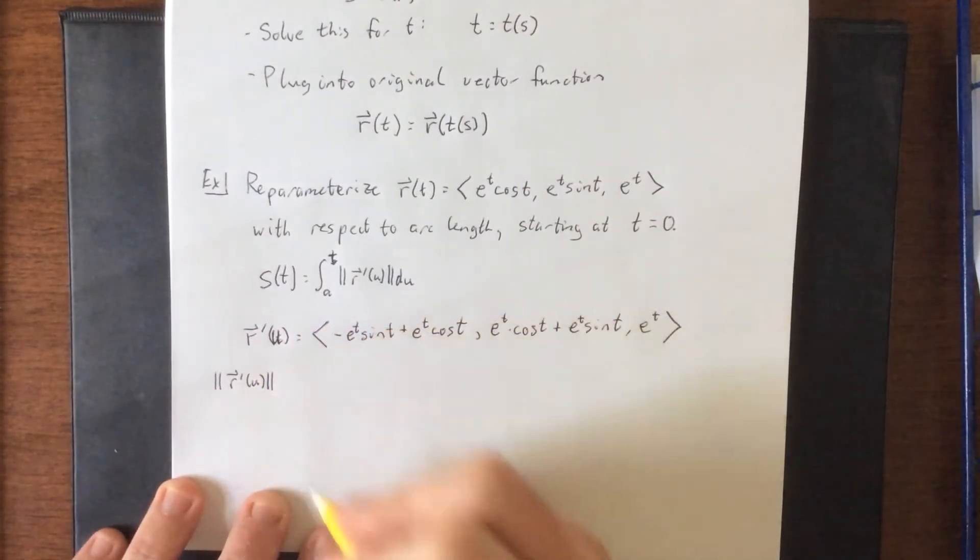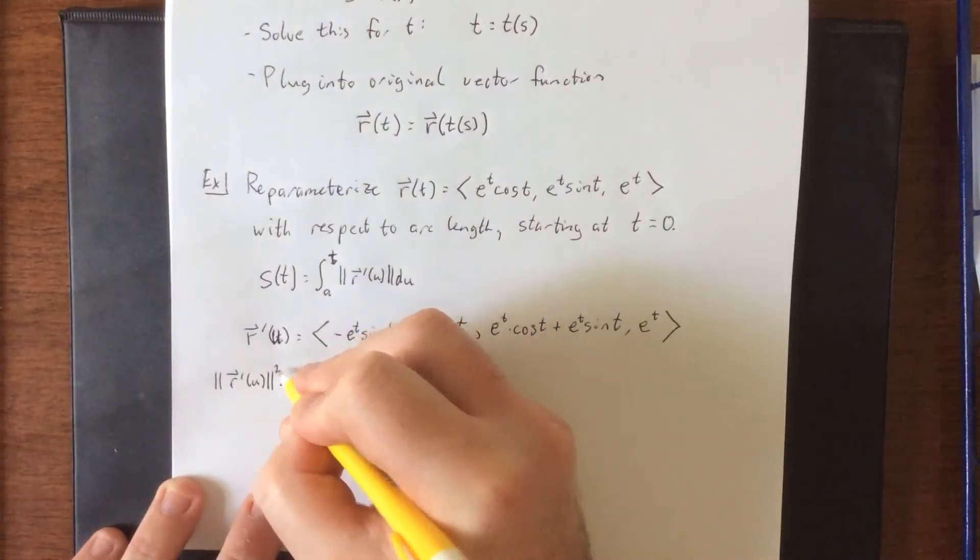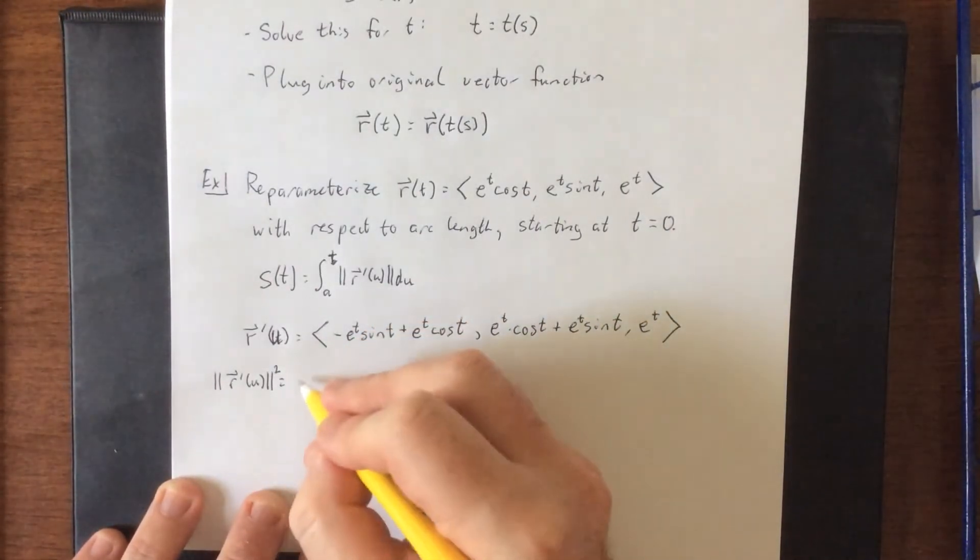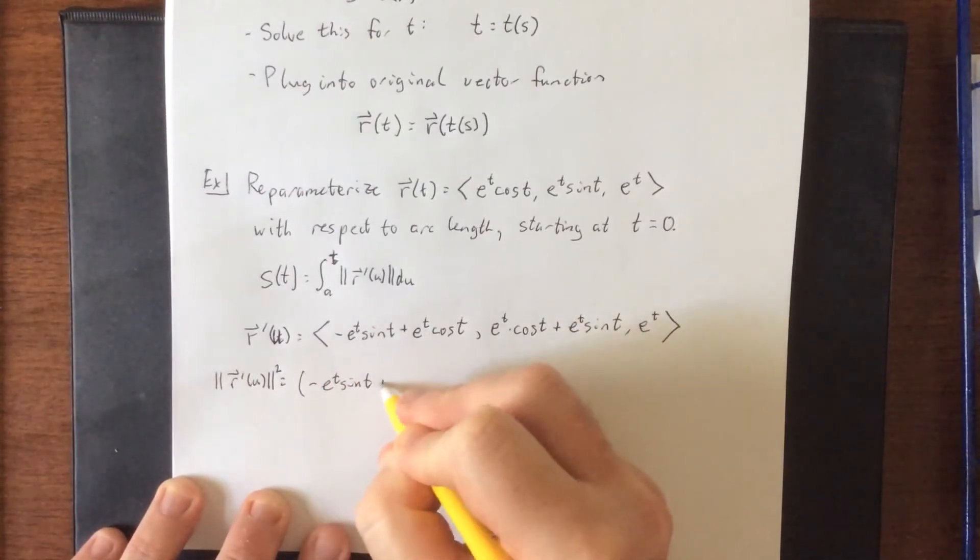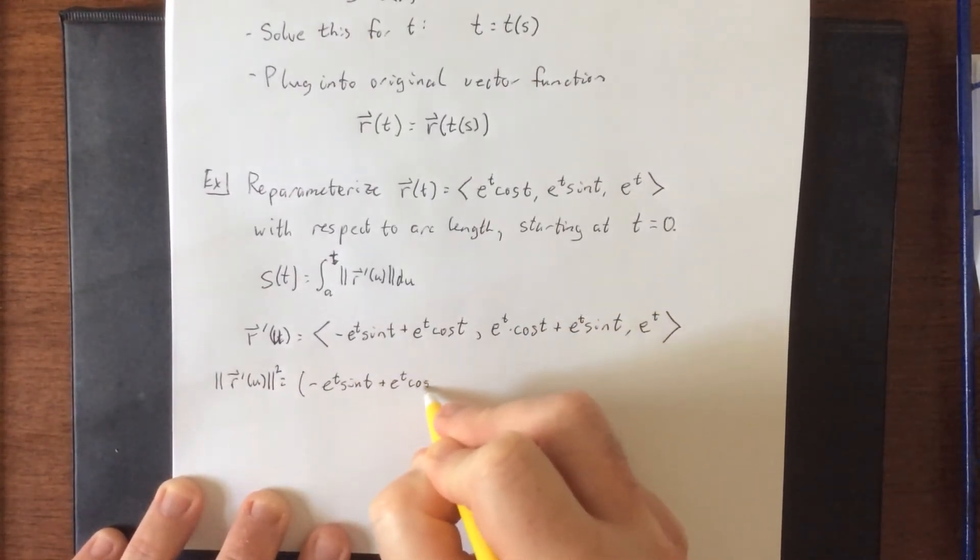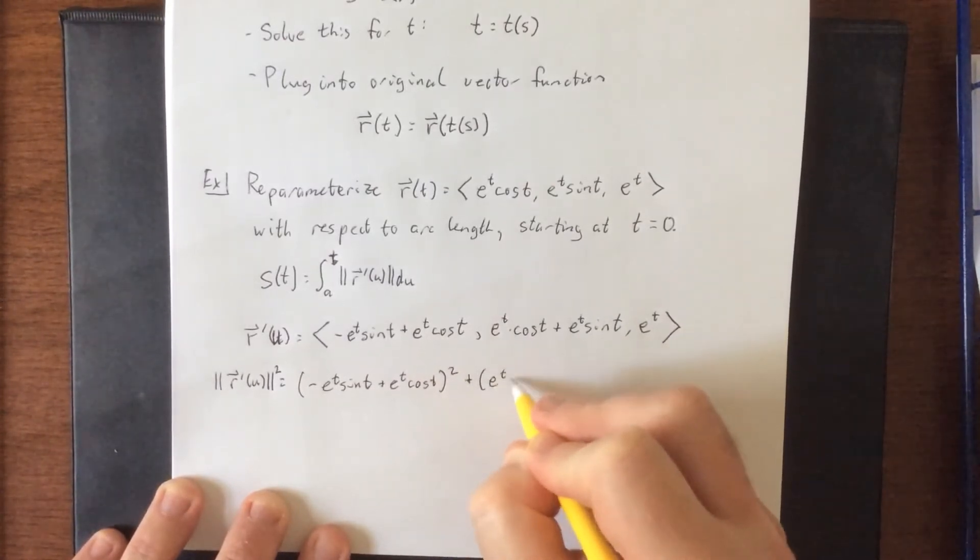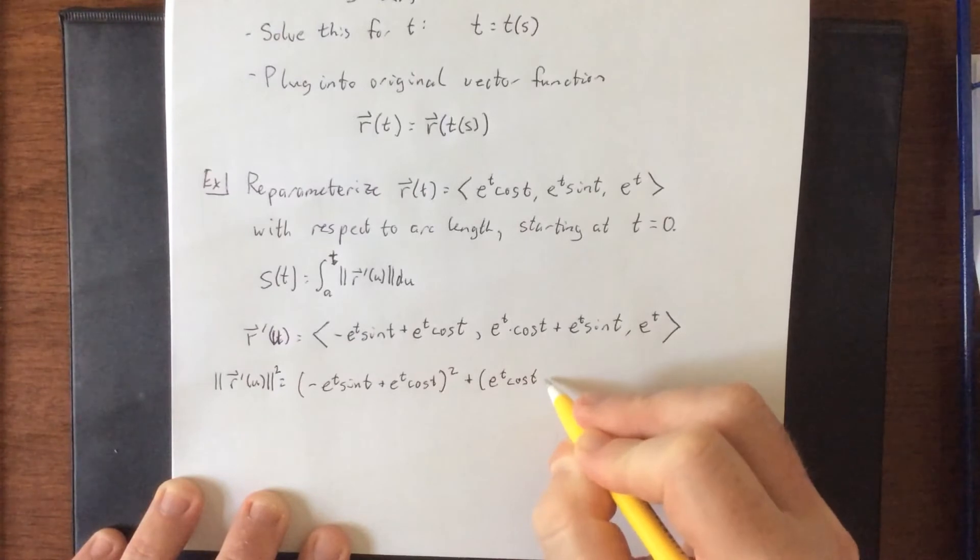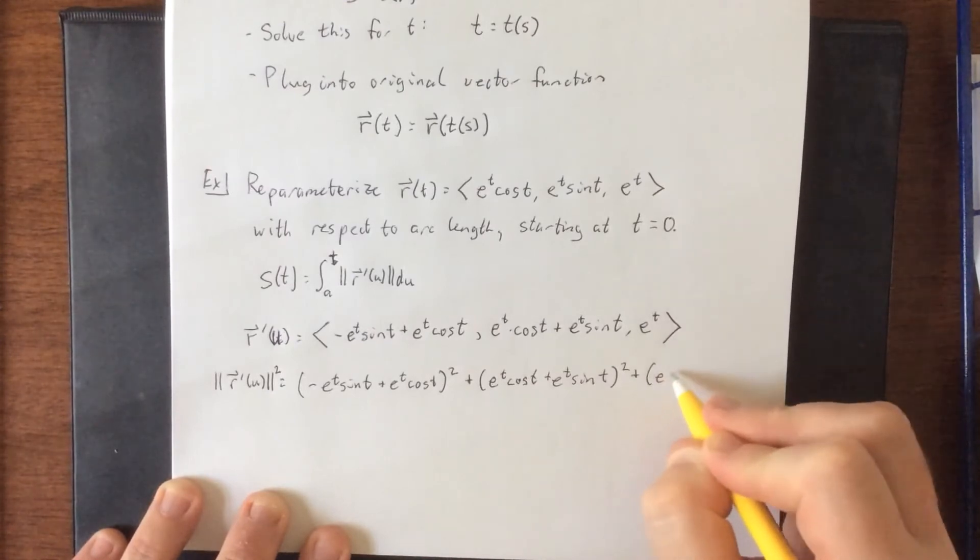So next up, let's find the magnitude of this by squaring all three of these components and throwing it under a radical. Actually, you know what, let's do the square first so that we don't have to keep drawing the radical over and over, and we'll just take the square root once we're done. So square the first component, square the second component, square the third component.